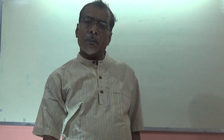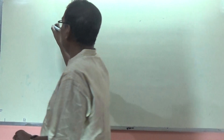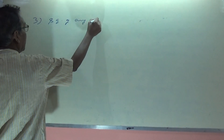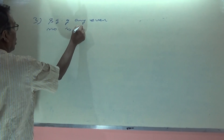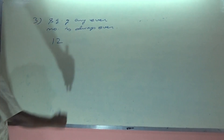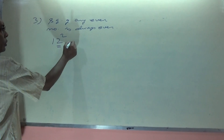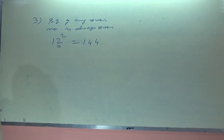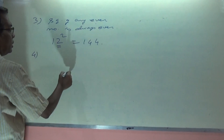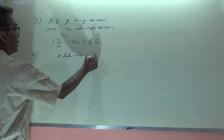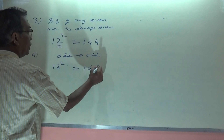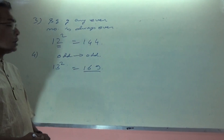Rule three: the square of any even number is always even. For example, 12 squared is 144, which is even. Rule four: the square of any odd number is always odd. For example, 13 squared is 169, which is odd.